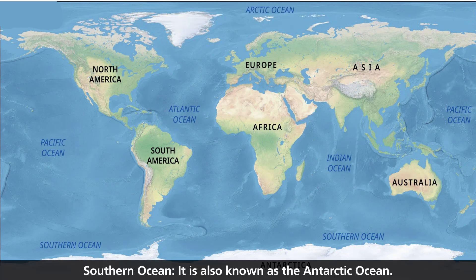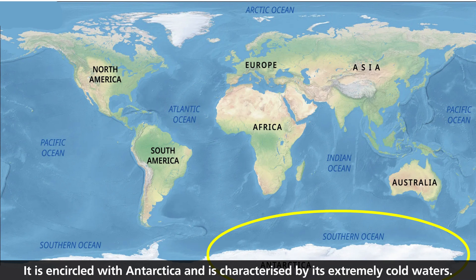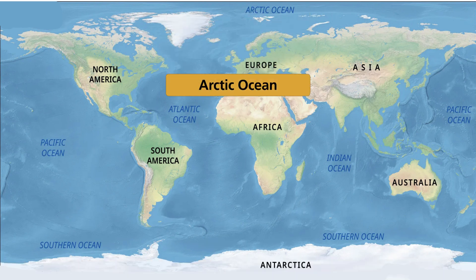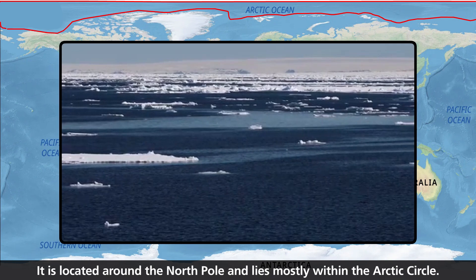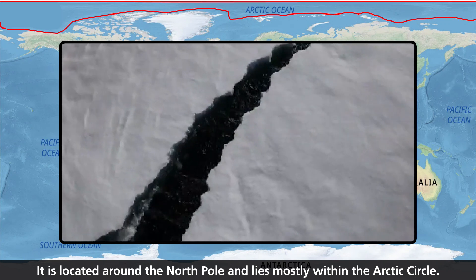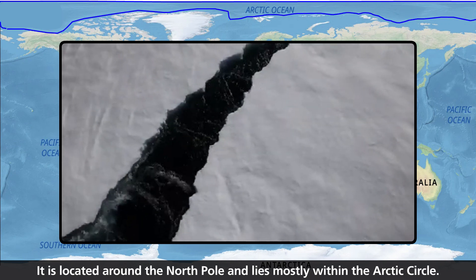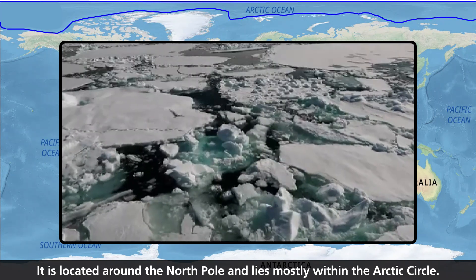Southern Ocean: It is also known as the Antarctic Ocean. It is encircled with Antarctica and is characterized by its extremely cold waters. Arctic Ocean: It is located around the North Pole and lies mostly within the Arctic Circle.